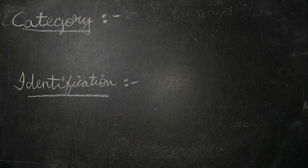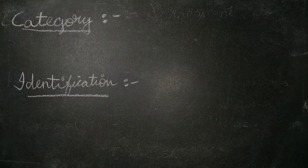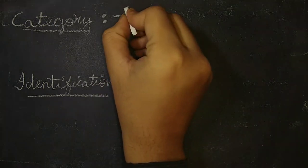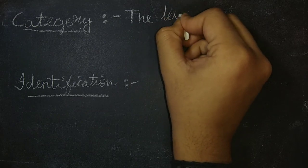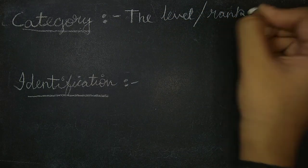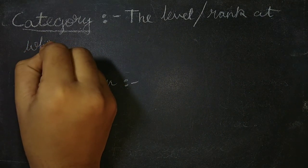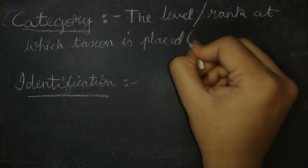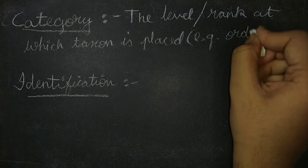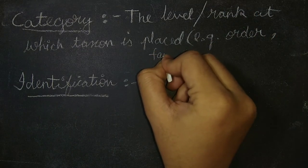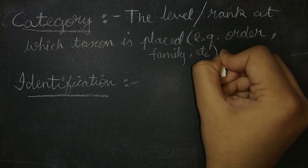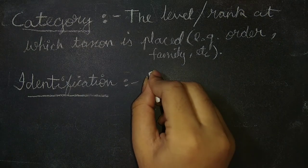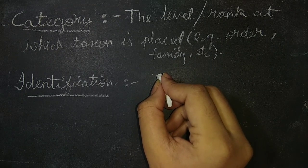Third is category. Category is the level or rank at which the taxon is placed, for example order, family, genus, and so forth. Fourth is identification. Identification is placing the individuals to each taxon by deductive process.